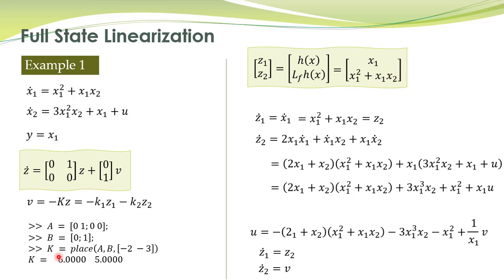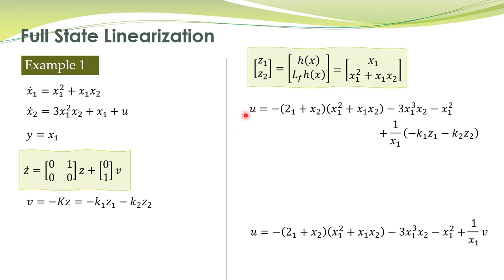This command can be utilized to design this gain matrix. We have placed the poles at minus 2 and minus 3, and that gives you this matrix k to be equal to 6 and 5. Hence, the overall control law is obtained.